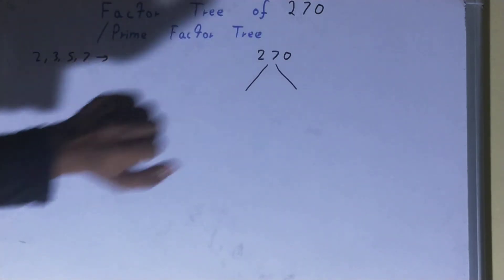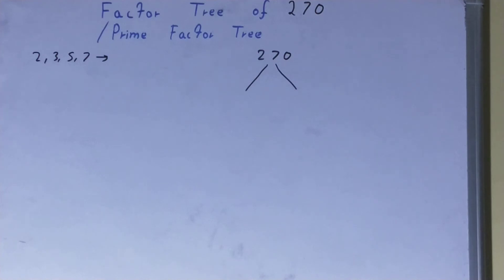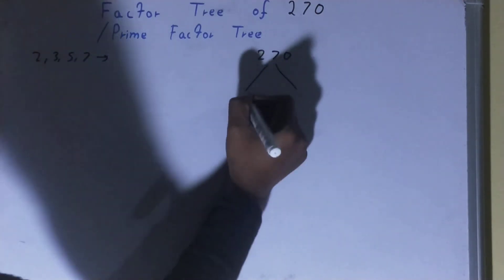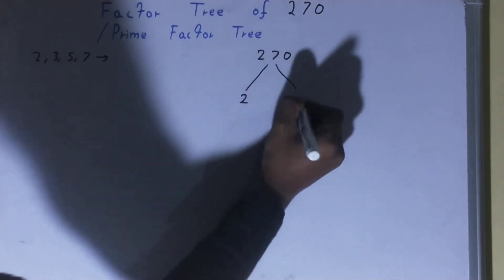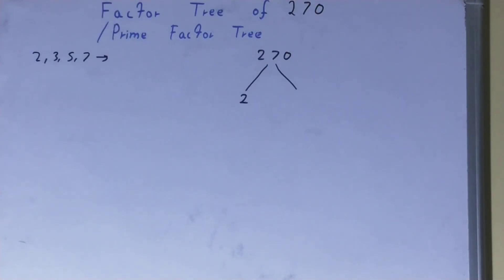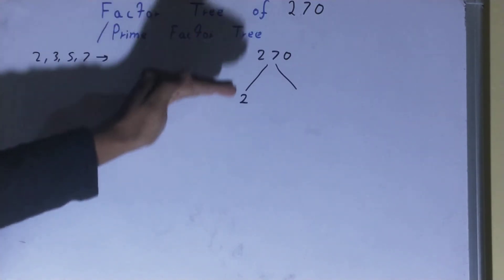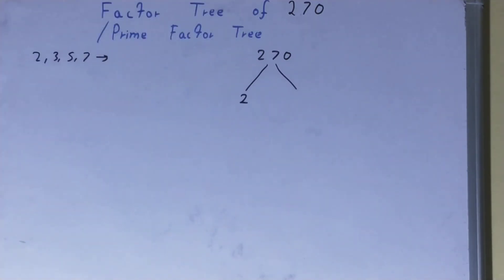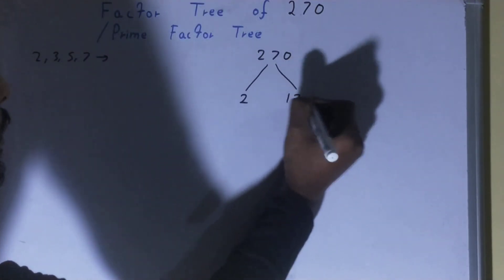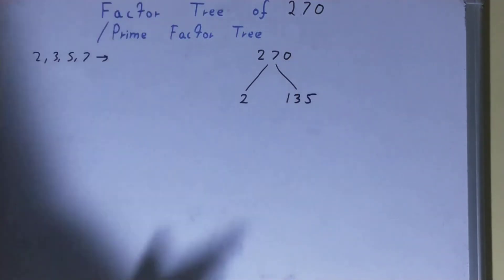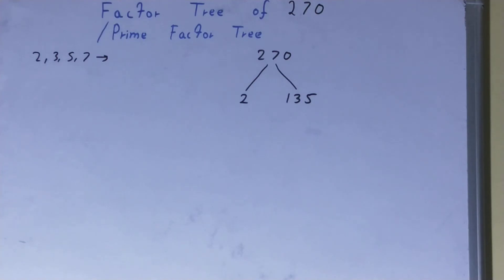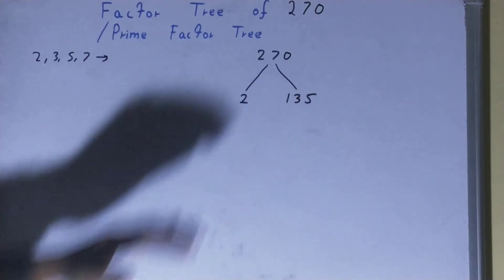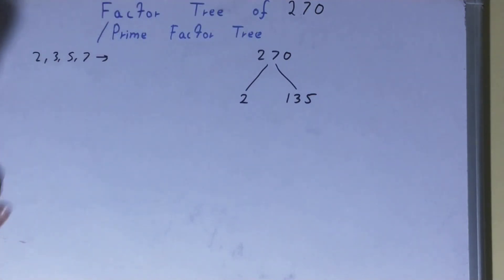We check: is the number 270 divisible by 2? Yes. So one of the numbers will be 2, and the other will be whatever we get after dividing. 270 divided by 2 gives us 135. Now do we need to factorize this 135 also? Yes, because it is also a composite number, just like 270.